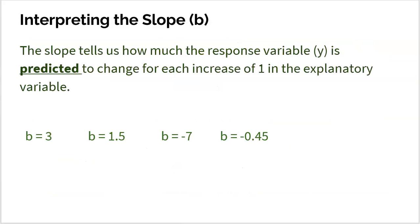Let's hammer what slope represents from a statistics point of view. The slope — the b value — tells us how much the response variable y is predicted to change for each increase of 1 in the explanatory variable. Why the word 'predicted'? Because y-hat represents the fact that no one is promising any of this will come true — it's just a prediction.